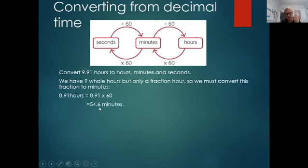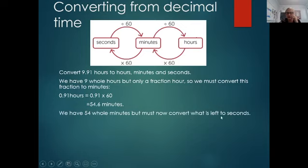Now, because we've got a 0.6, we need to sort that out, because that means that we've got some seconds that we need to use up. So what do we do with that? 54 whole minutes, we now need to convert what's left to seconds. So we times it by 60 again. Okay, so it's 60.